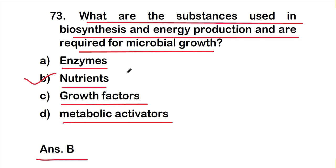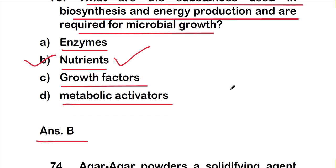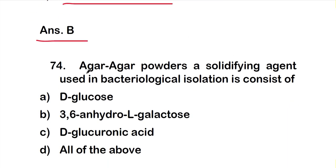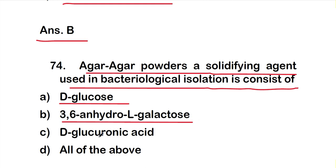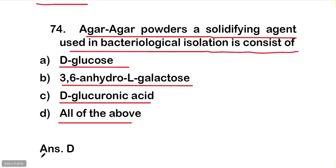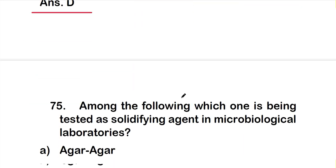Question number 74: Agar-agar powder, a solidifying agent used in bacteriological isolation, consists of which components? Options are: A) D-glucose, B) 3,6-anhydro-L-galactose, C) D-glucuronic acid, D) all of the above. The right answer is option D — agar powder consists of D-glucose, 3,6-anhydro-L-galactose, and D-glucuronic acid.